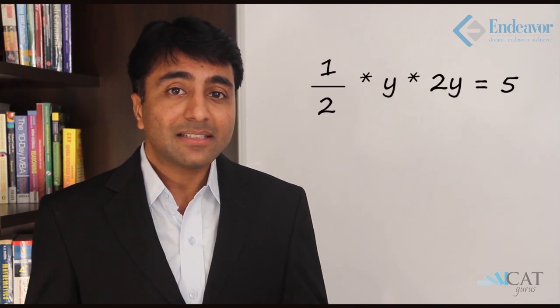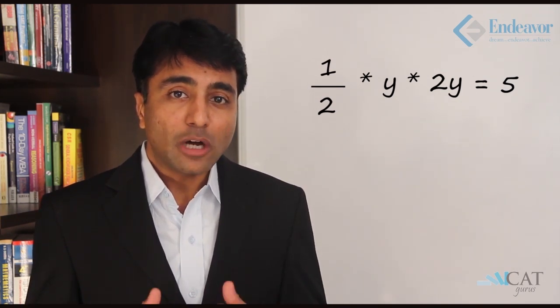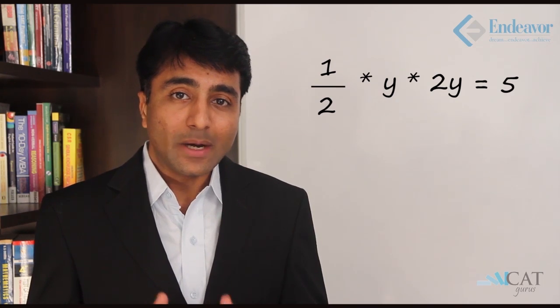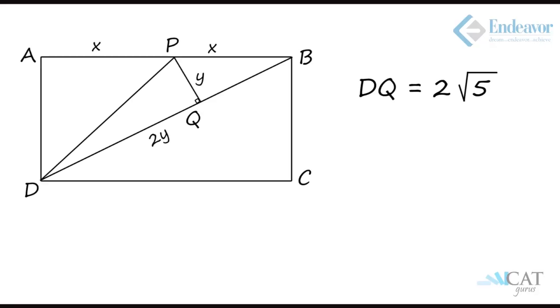Because there is a triangle with a perpendicular, we will use the concept of Pythagoras theorem. The area is given as 5 square centimeters, so area of triangle equals half base PQ (that is Y) into height DQ (that is 2Y). Therefore half into Y into 2Y, giving Y squared equals 5, so Y equals root 5. With Y as root 5, DQ is 2 root 5 and the hypotenuse DP is 5. It is already given that AD is 4, so taking the Pythagorean triplet with 4 and 5, the third side must be 3.